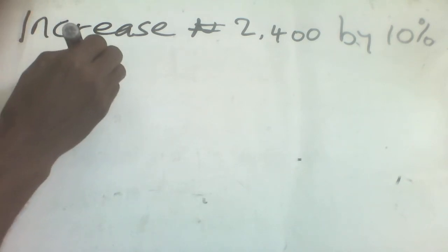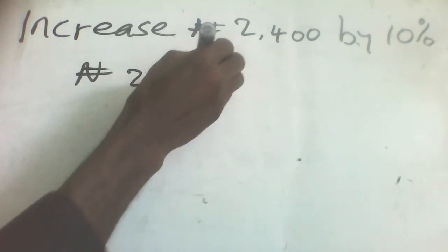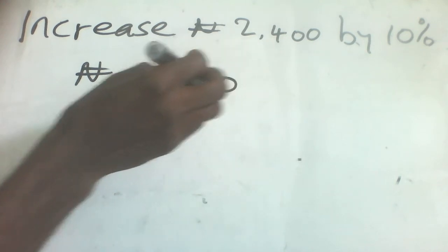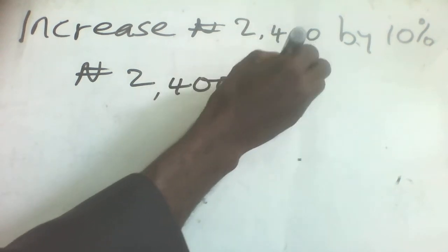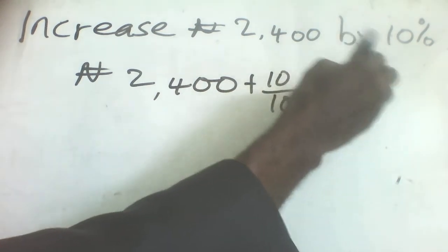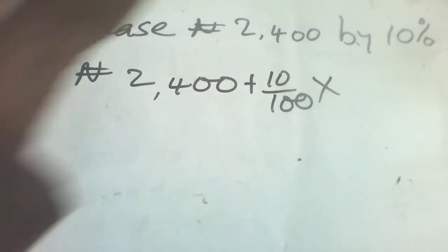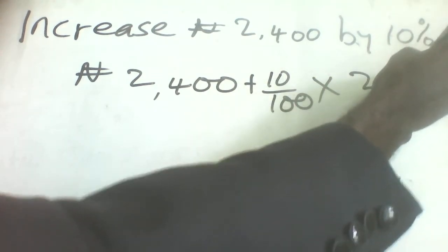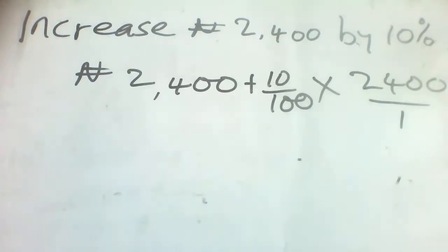So let's say this is ₦2,400. 2,400 plus 10 divided by 100, then times 2,400 divided by 1, because you are asked to increase it.